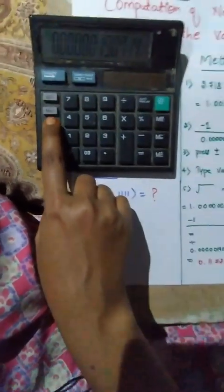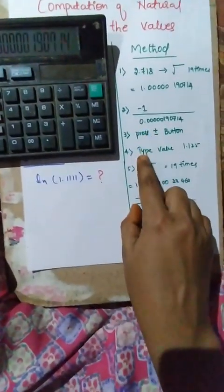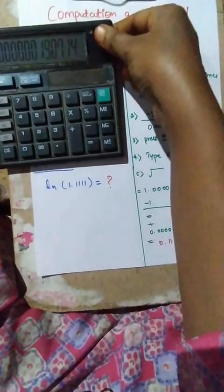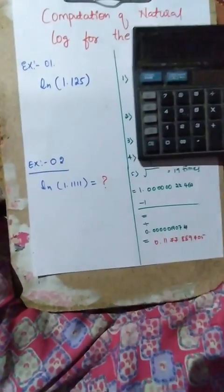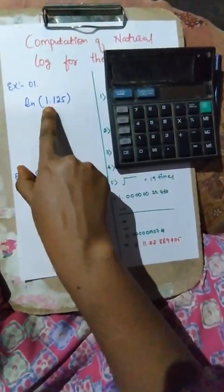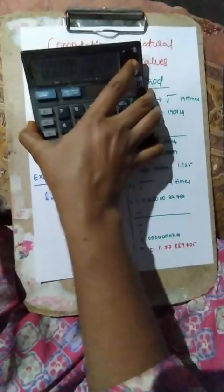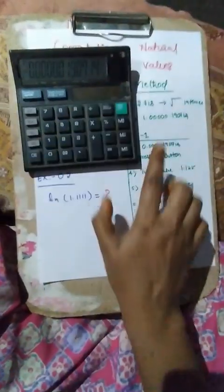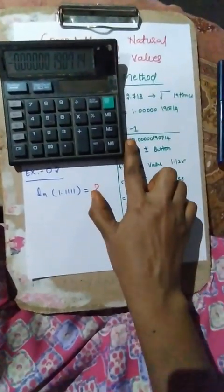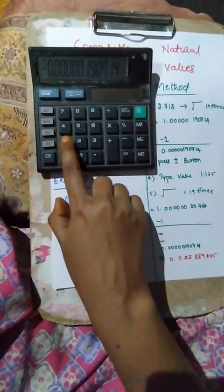Next, we have to take the value which is in the bracket. Here the value is 1.125, so type the value 1.125.